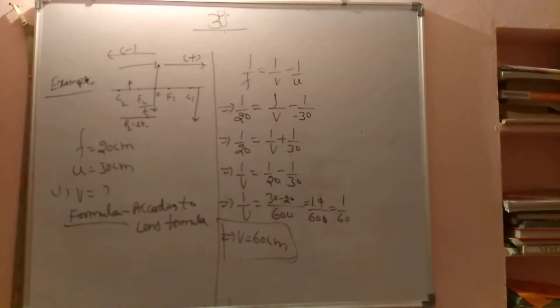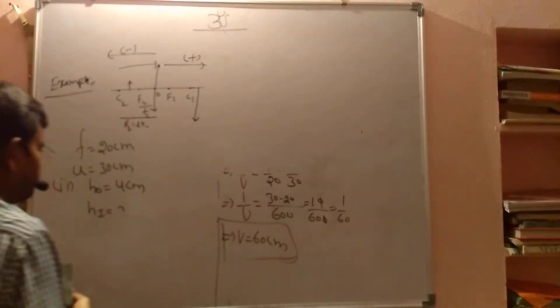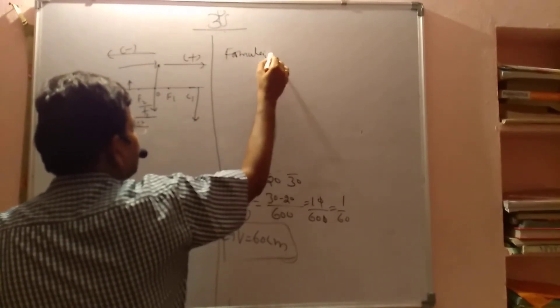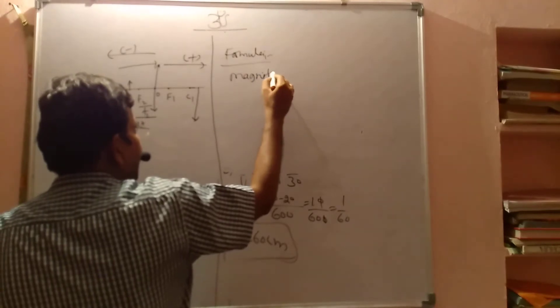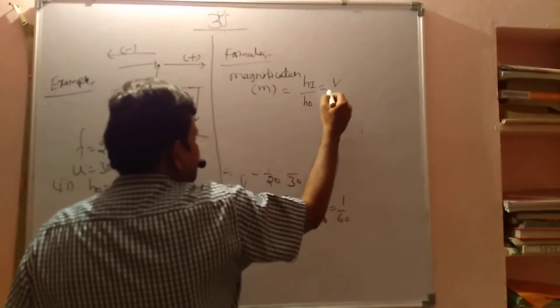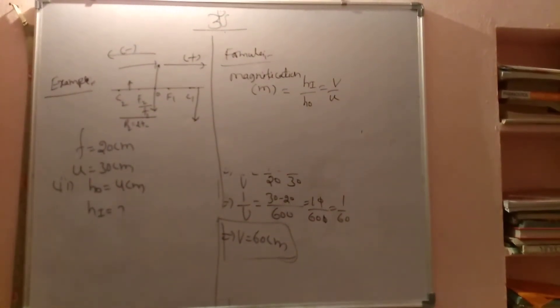Now for the same problem, by taking the height of the object, we are finding the height of the image. In the same problem, if the height of the object is 4 centimeters, what about the height of the image? This thing we are doing. Now what is the formula for magnification? First you write the formula. Magnification M equals height of the image by height of the object equals V by U. That is the generalized formula. Again you apply sign convention for getting particular condition.